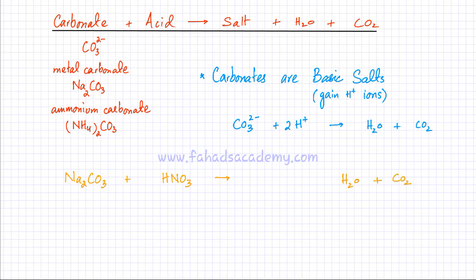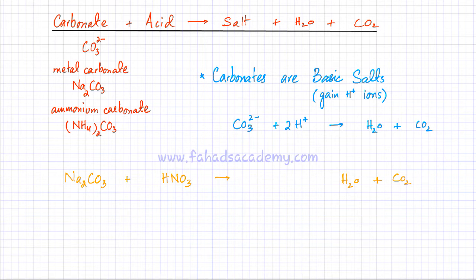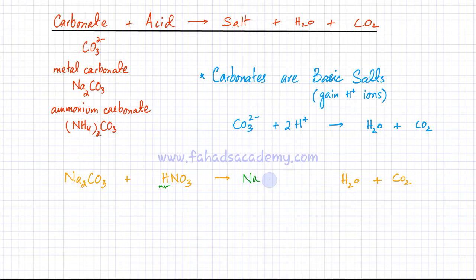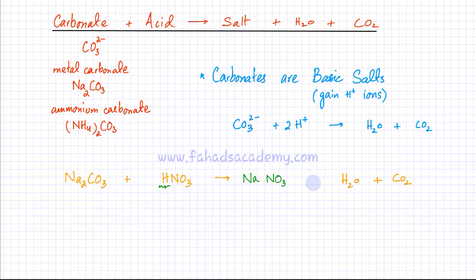We need to figure out the formula of the salt. Salt is produced when an acid is neutralized — get rid of the H in the acid. If there's no H, the acid can no longer act as an acid, since an acid by definition produces H⁺ ions. Replace the H⁺ with the other positive ion, which in this case is the sodium ion. So I get rid of H in HNO₃ and put Na in its place, giving NaNO₃. Since NO₃ is −1 and Na is +1, the formula of the salt is NaNO₃.